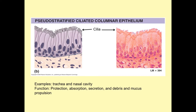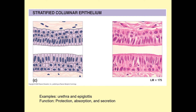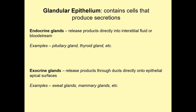These cilia are structures that allow for motility of whatever is on the apical surface of the cell. Here's a picture of stratified columnar epithelium — you can see the layers, and the apical surface is the columnar cells. We always refer to the apical surface as our defining feature, even though some cells look cuboidal at the basal surface. Here we have some glandular epithelium. Exocrine glands release their products onto body surfaces, while endocrine glands release products directly into the body fluids, such as the bloodstream or the interstitial fluid.